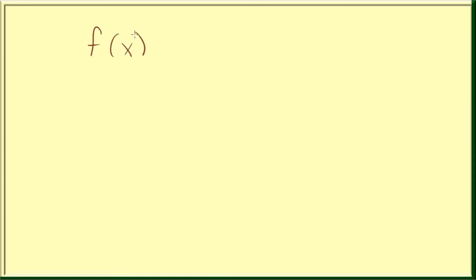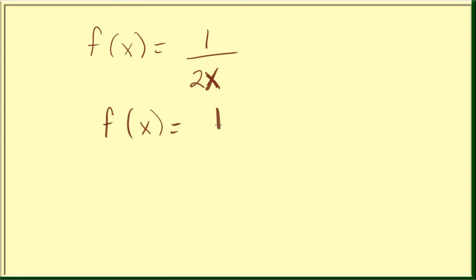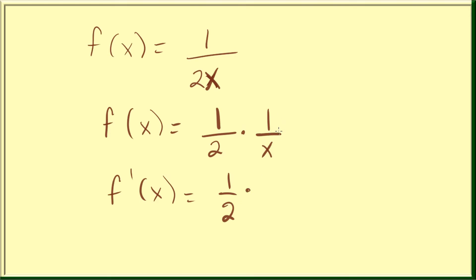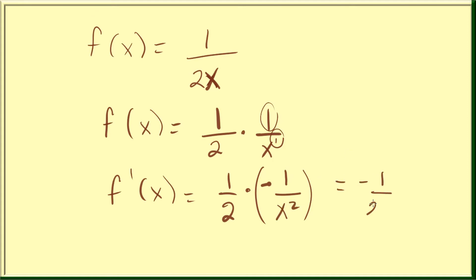Now let's say we have 1 over 2x. What happens if it's 2x instead of just x? This is just one-half times 1 over x. So its derivative is one-half times the result from our pattern for 1 over x: switch the sign and multiply the exponent times 1, giving negative 1 over 2x squared.